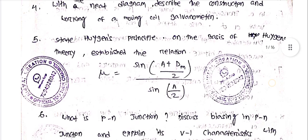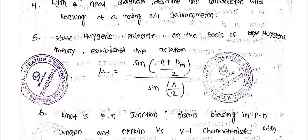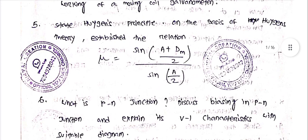Next question, the Huygens principle on the basis of Huygens theory. Establish the relation mu equal to sin A plus dm by 2 divided by sin A by 2.